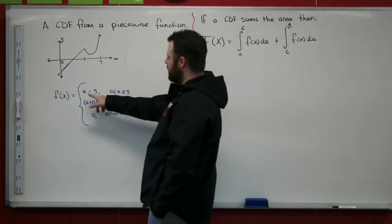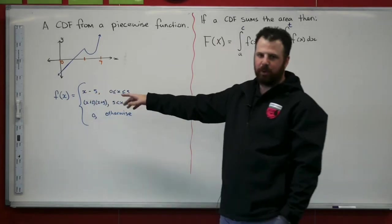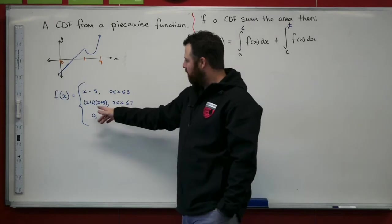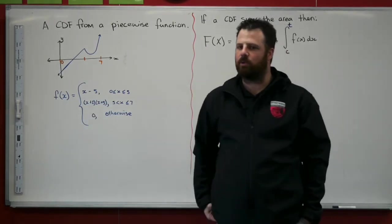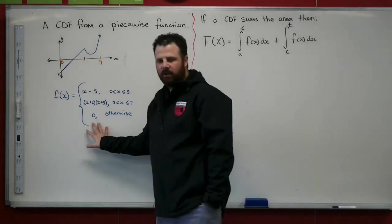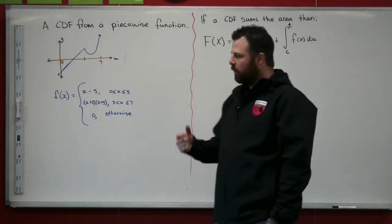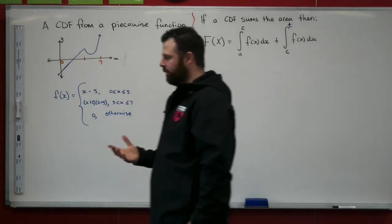Our lowercase f, our probability density function, can be described as x minus 5, a linear equation for values between 0 and 5. For values from 5 to 7, it's described as some kind of quadratic shifted up a little bit, and anywhere else it's 0.